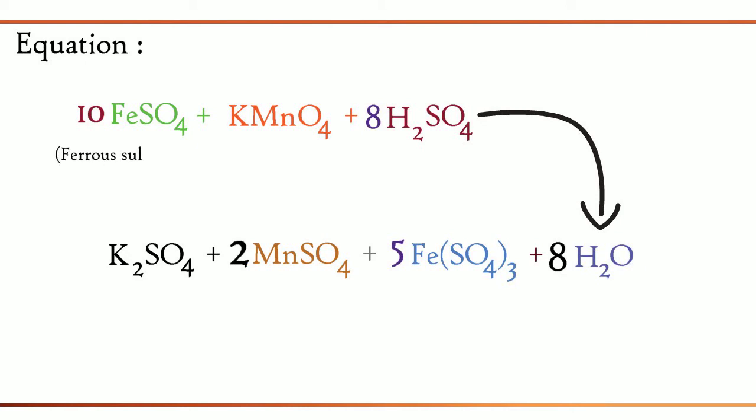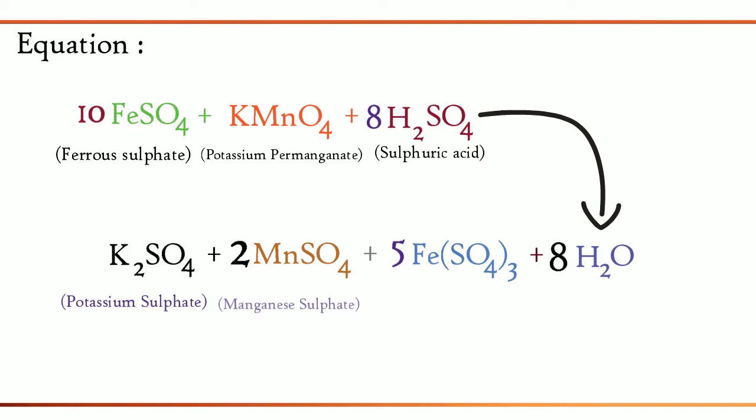Ferrous sulfate reacts with potassium permanganate in presence of sulfuric acid to give potassium sulfate, manganese sulfate, ferric sulfate and water.